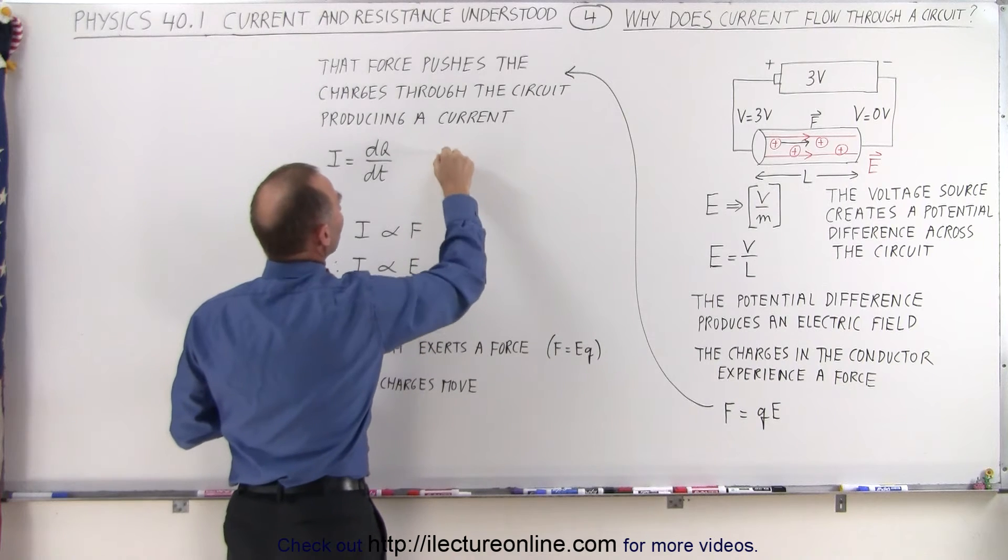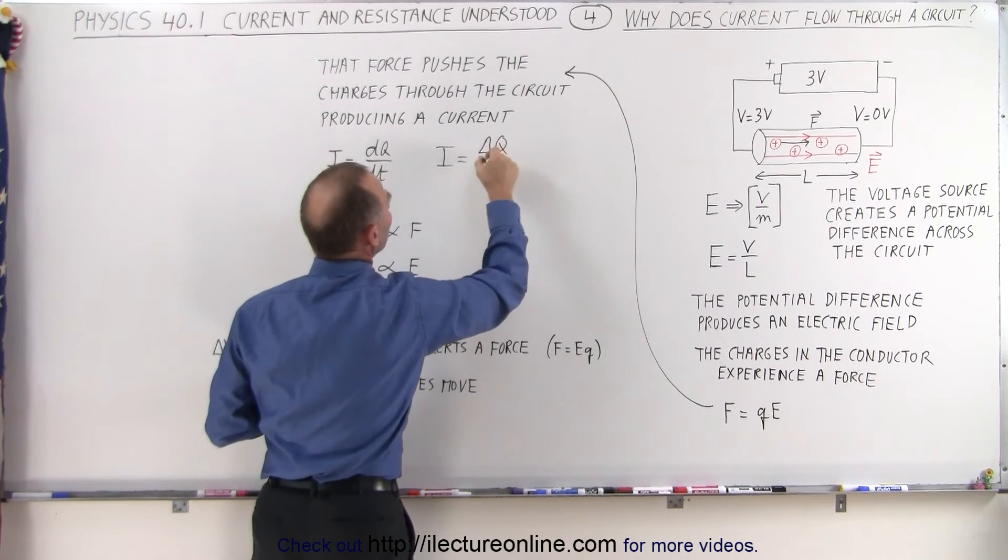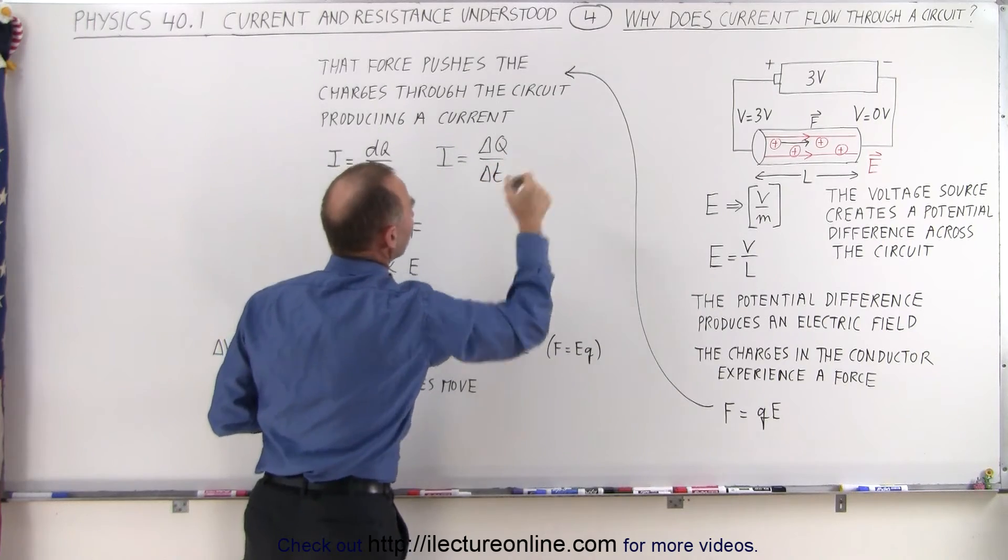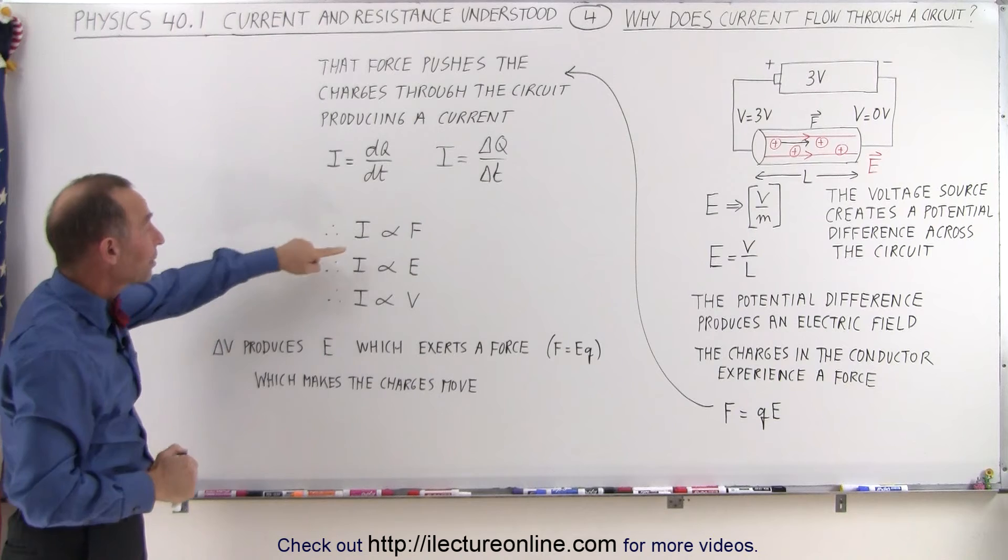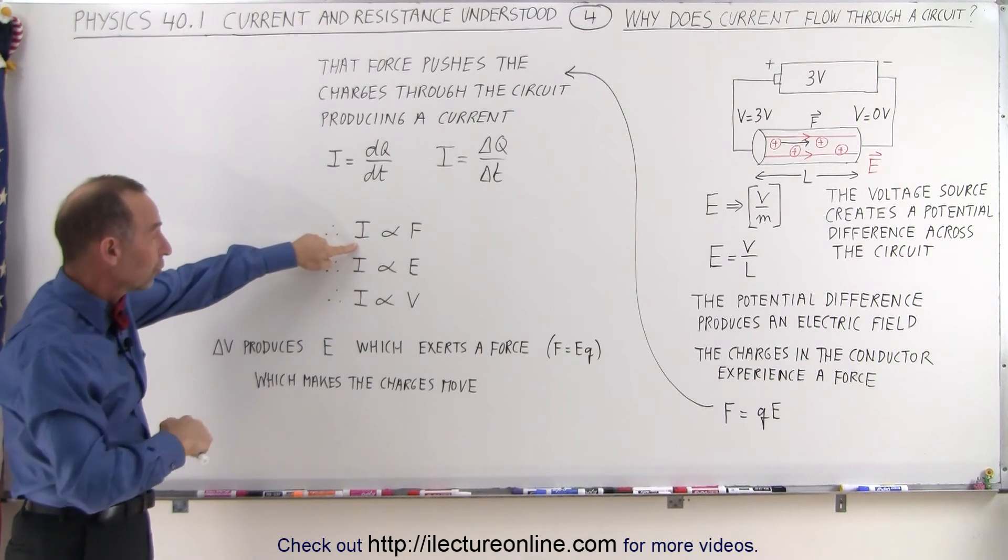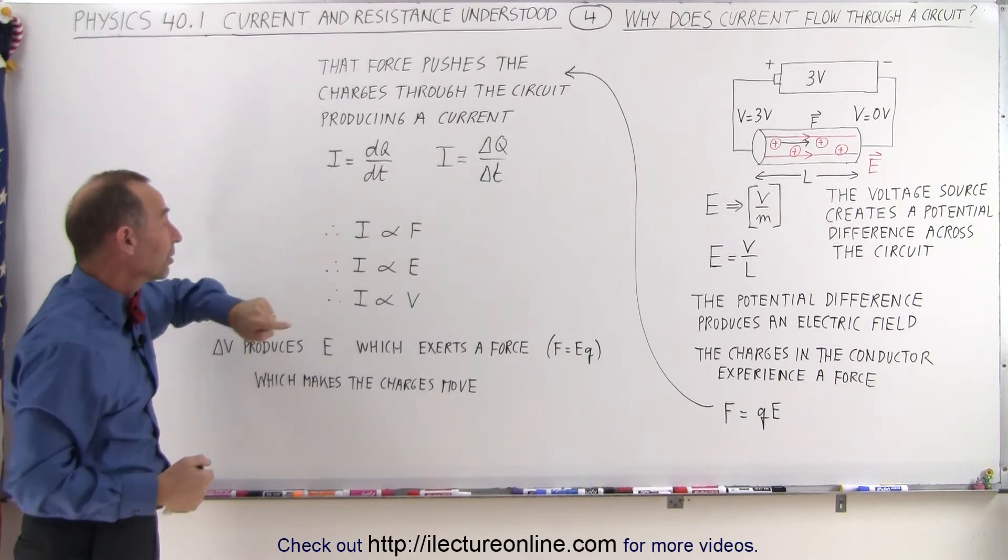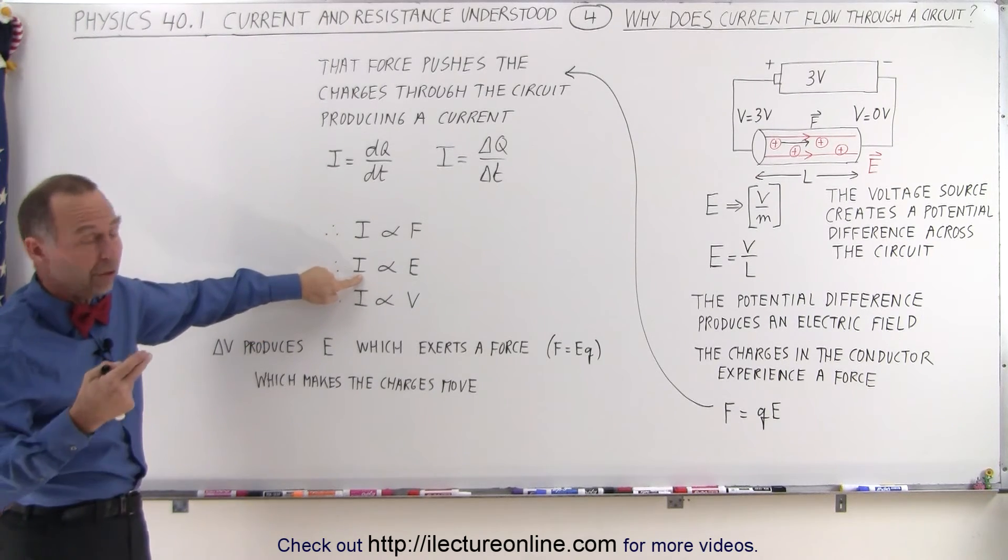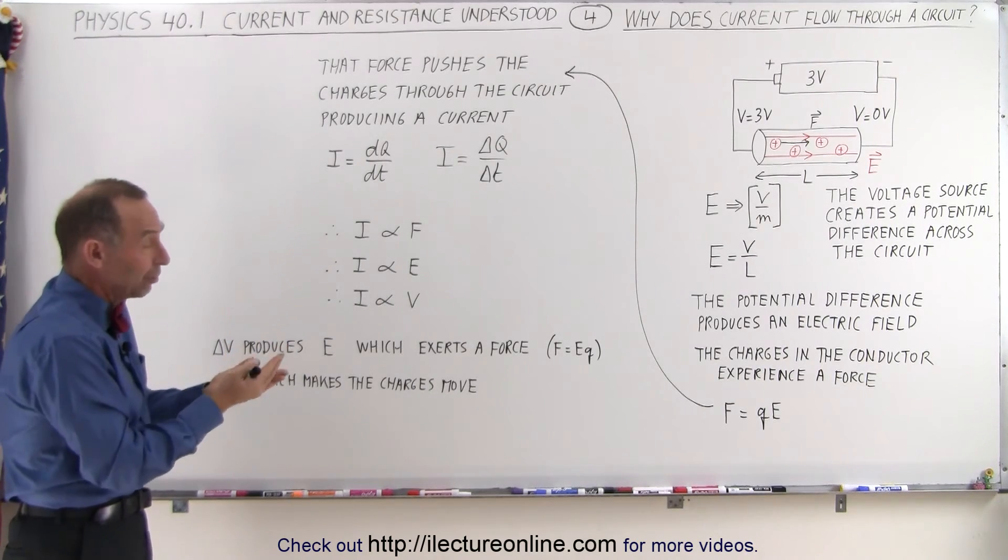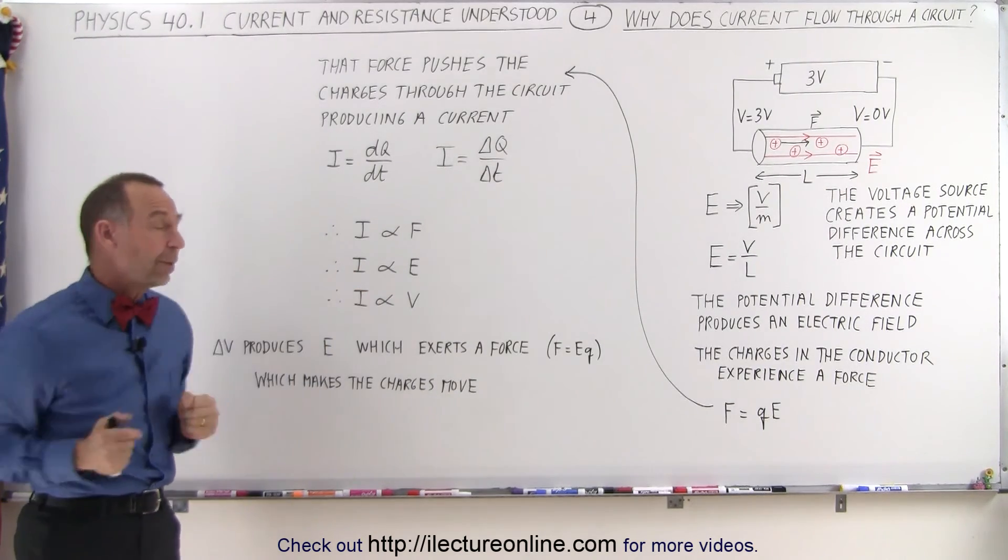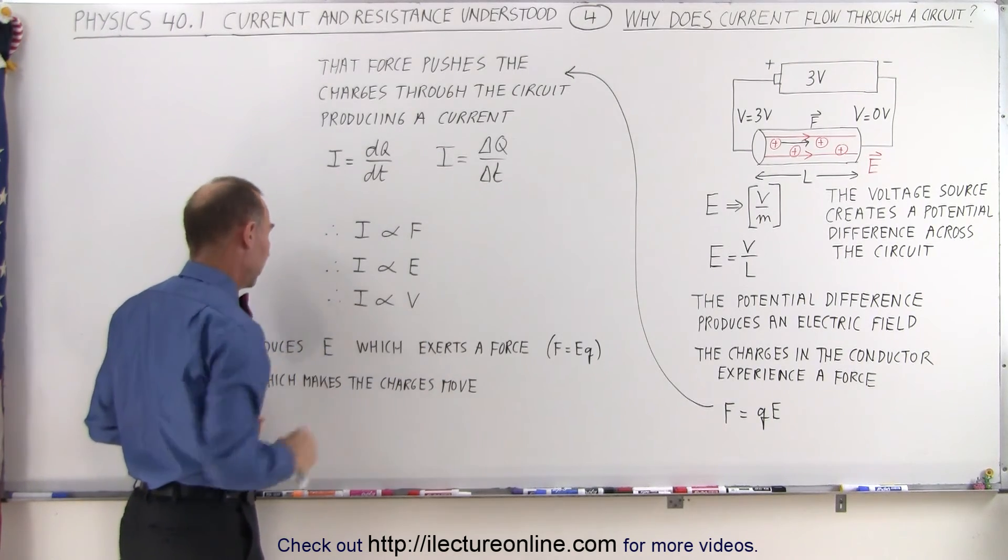or we can also write it in terms of I, without using the differential equation, the amount of charge q, in the amount of time passing through a circuit. Now, what we can see here is that the amount of current going through a circuit is simply proportional to the amount of force applied by the electric field. So therefore, the current is proportional to the strength of the electric field. And since the strength of the electric field is proportional to the voltage applied, we can then say that the current to the circuit is proportional to the voltage applied.